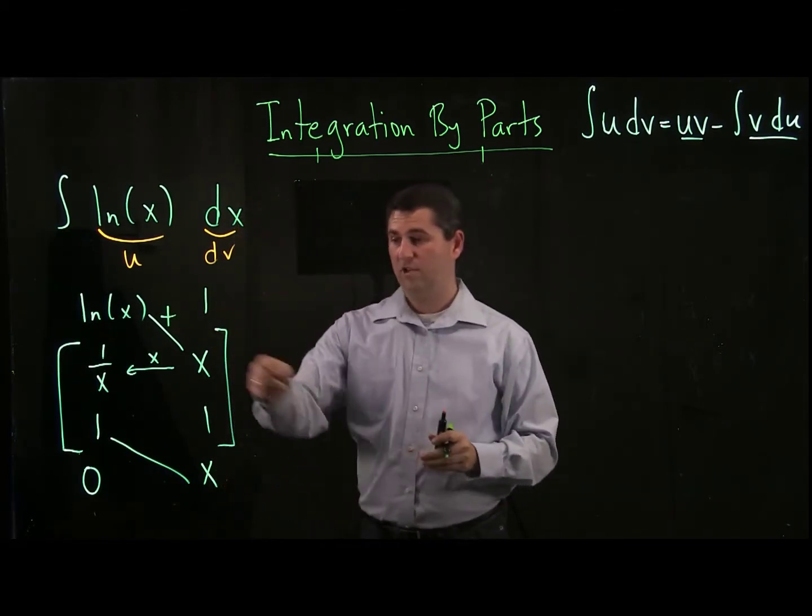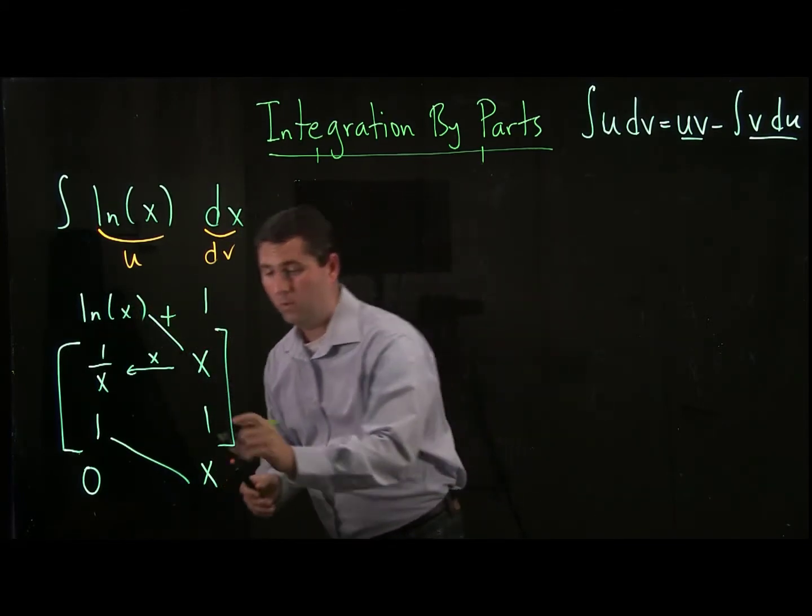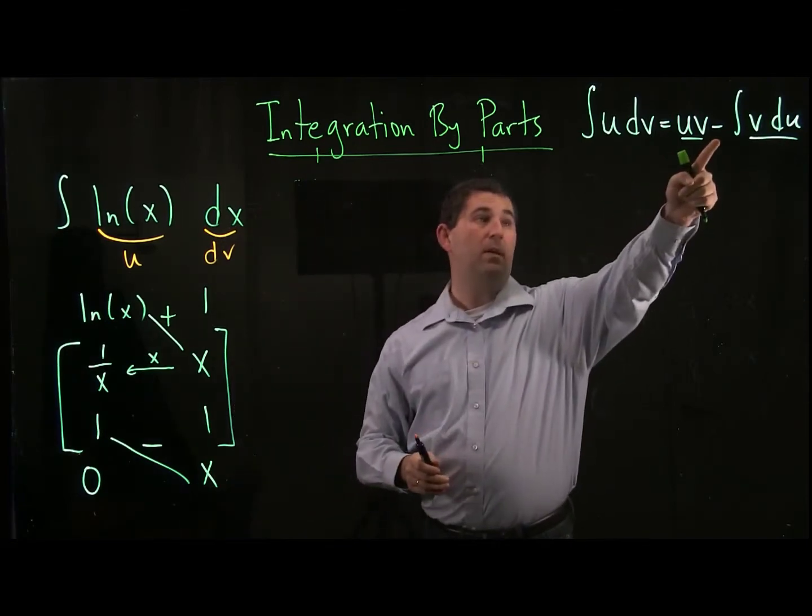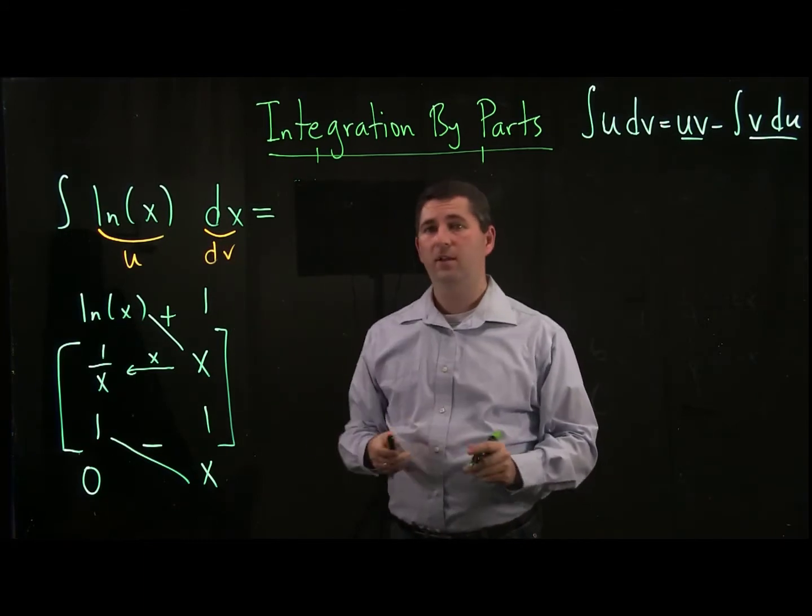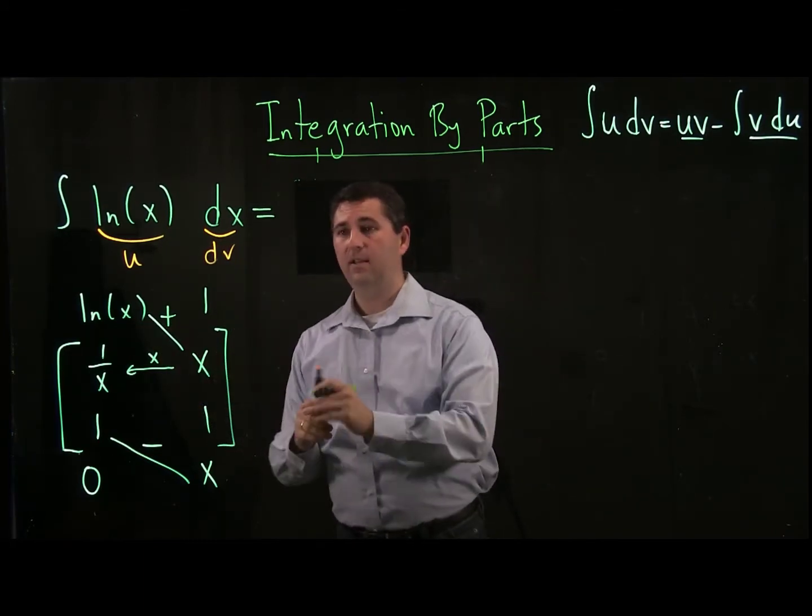The first time, of course, it's just u times v. The second time through, you have to get a minus sign because you're subtracting. And so in the end, any derivative of ln of x will be x times ln of x